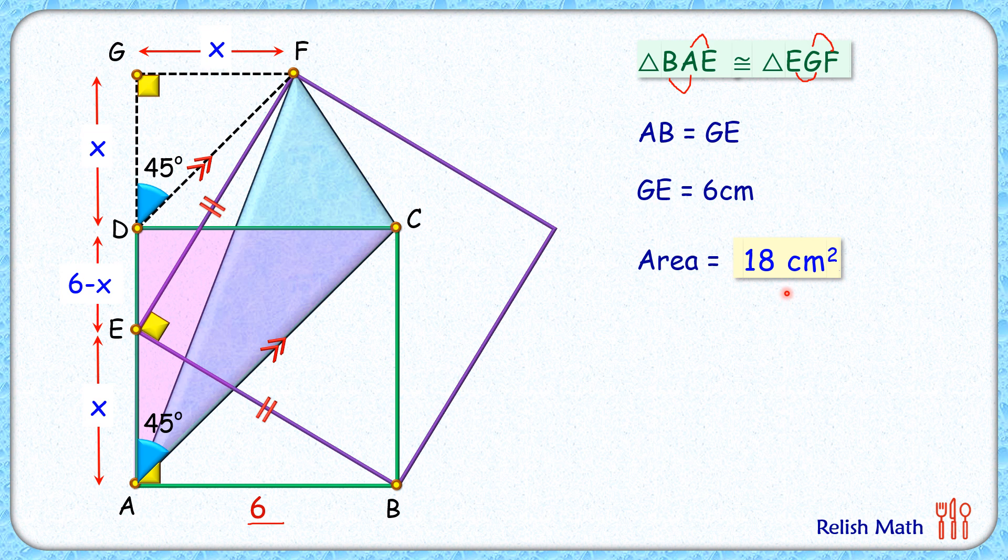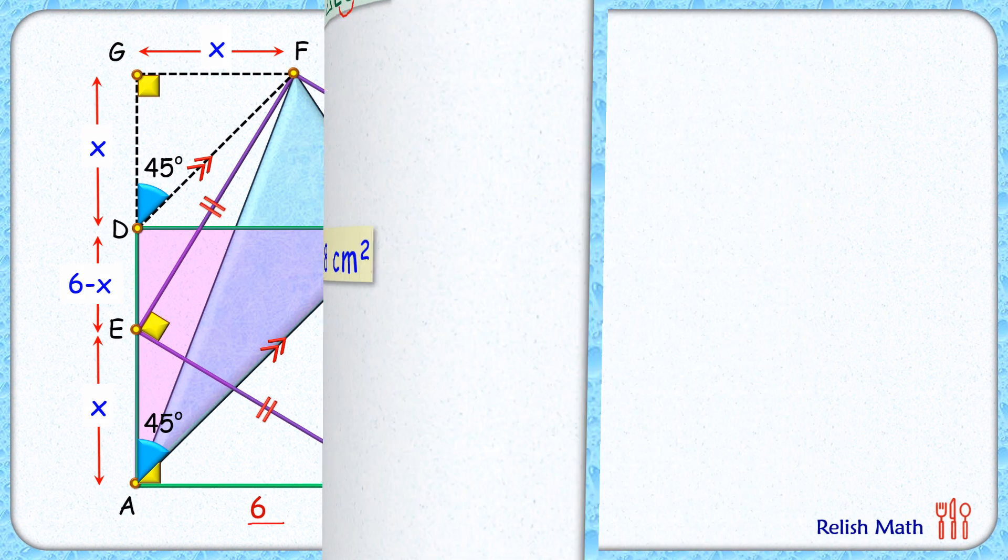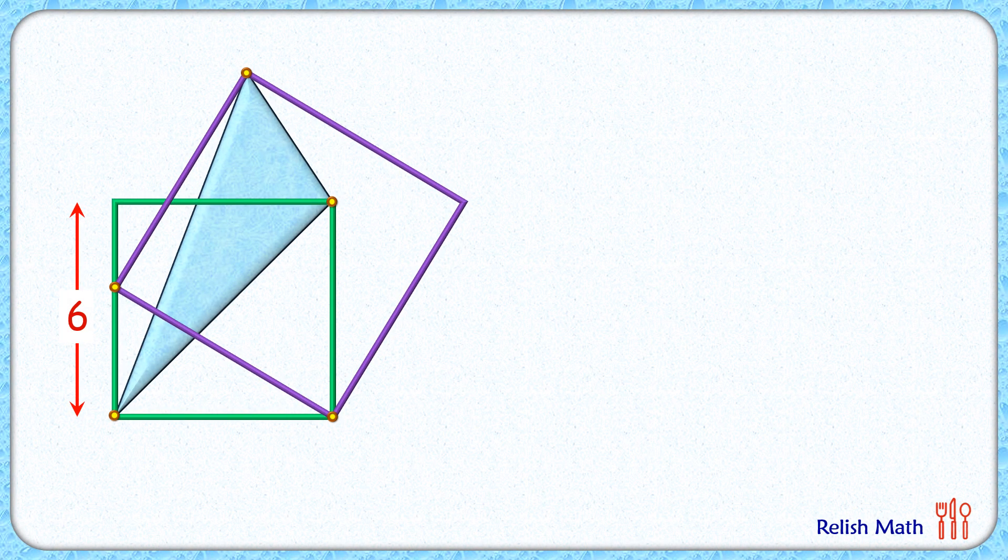Now let's check the logical approach for the same question. For the logical approach, we'll exploit the fact that there is absolutely no data or limitation given related to this purple square, except that its one vertex coincides with the vertex of the green square.